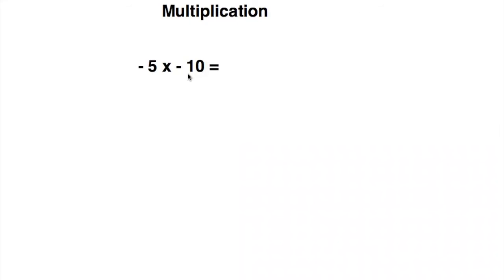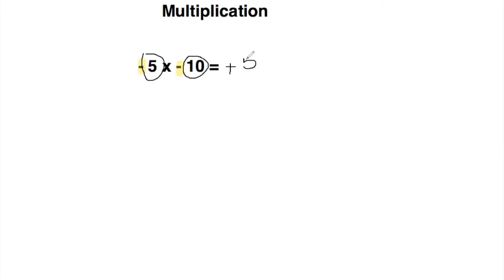The next operation we're going to do is multiplication. Multiplication works the same way: two negatives equal a positive — that's the same rule as addition, just with a multiplication sign. So you'd always know the result would be positive when you have two negatives. Then you just do five times 10, which gives you 50. So the answer to negative five times negative 10 is 50.